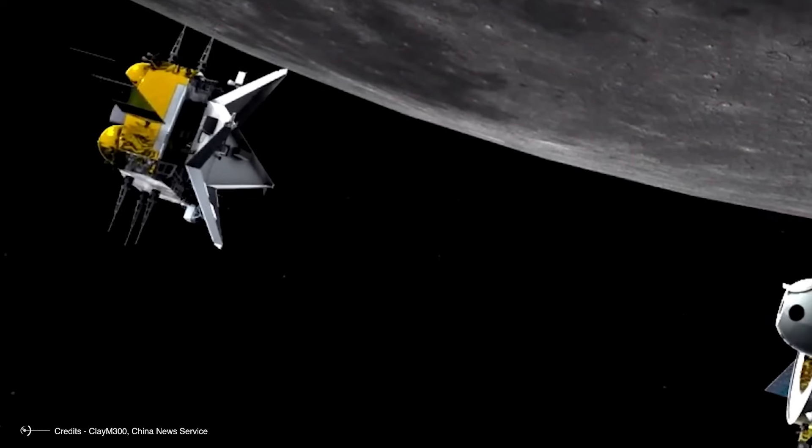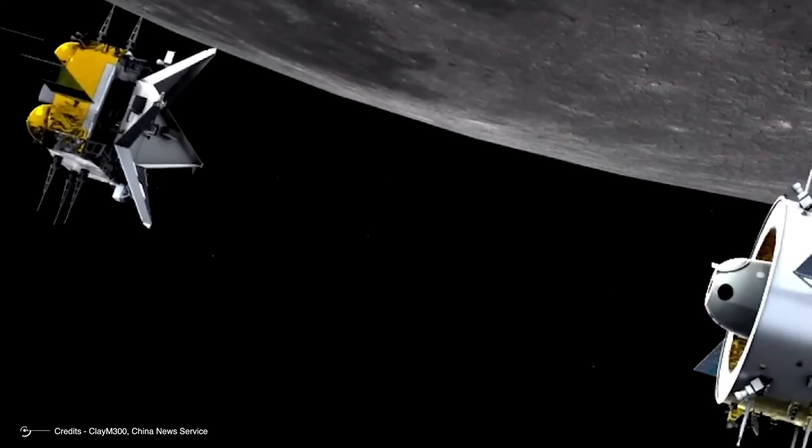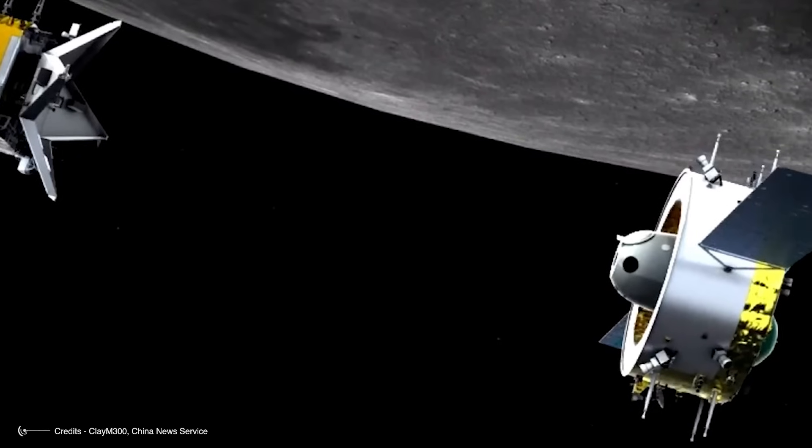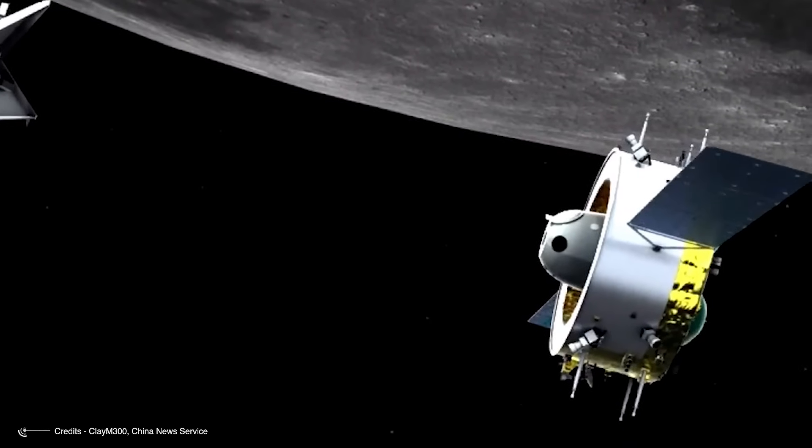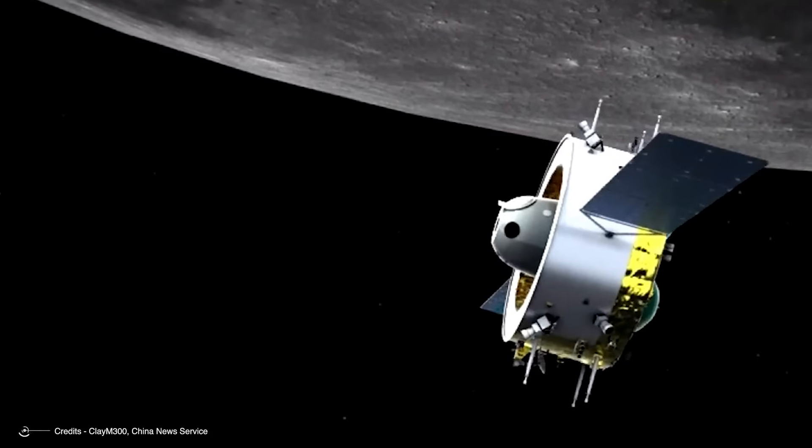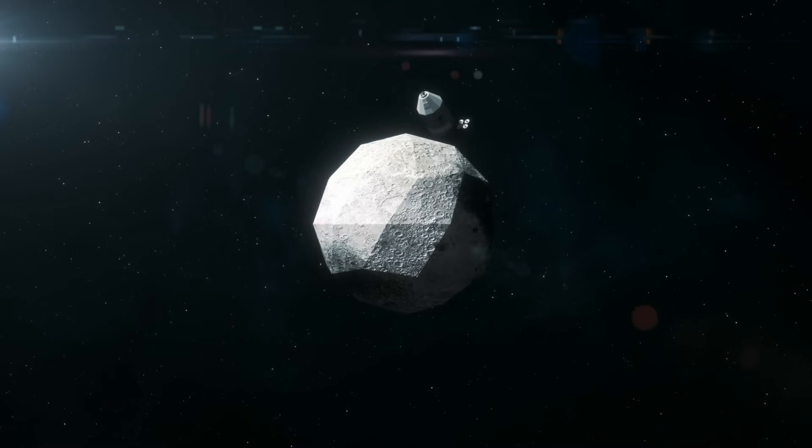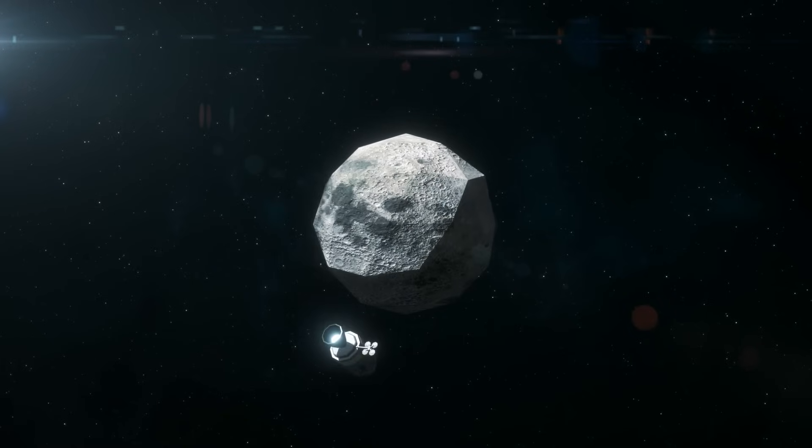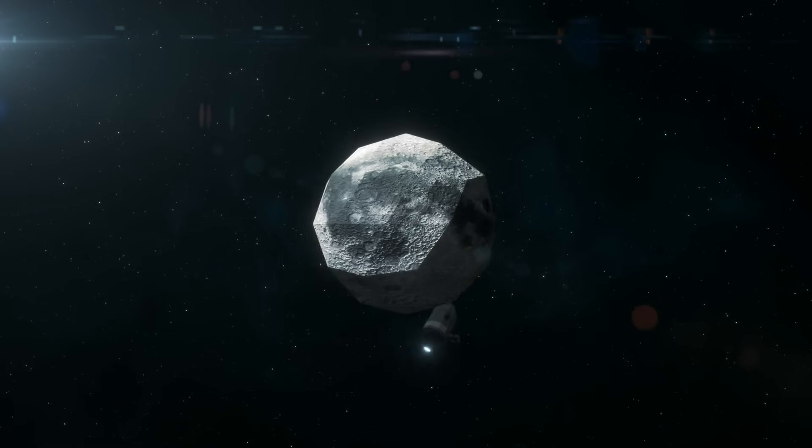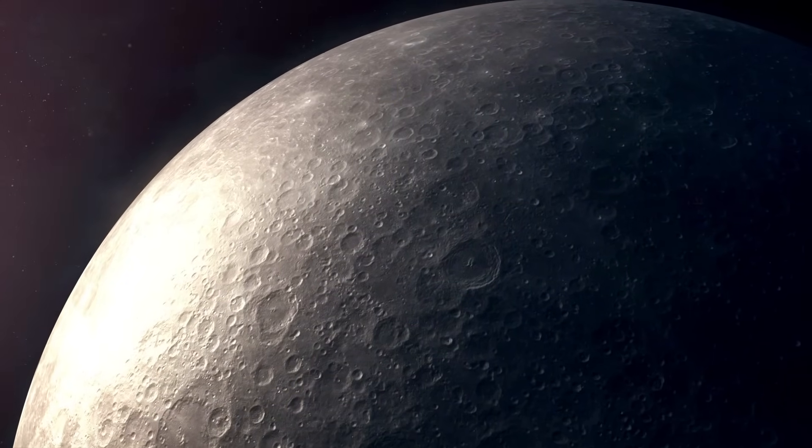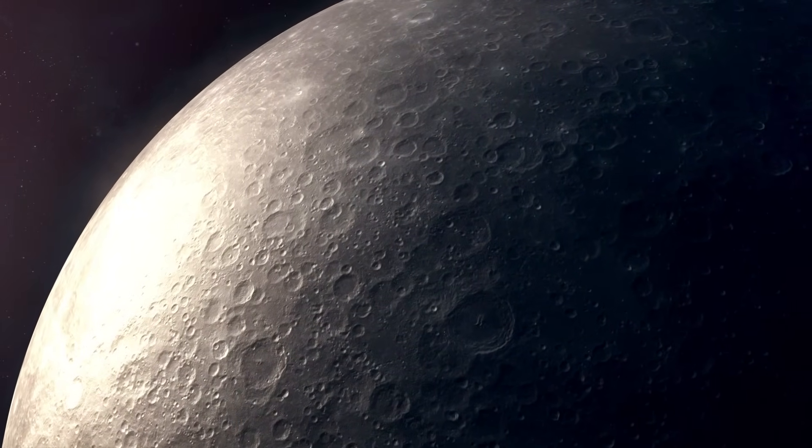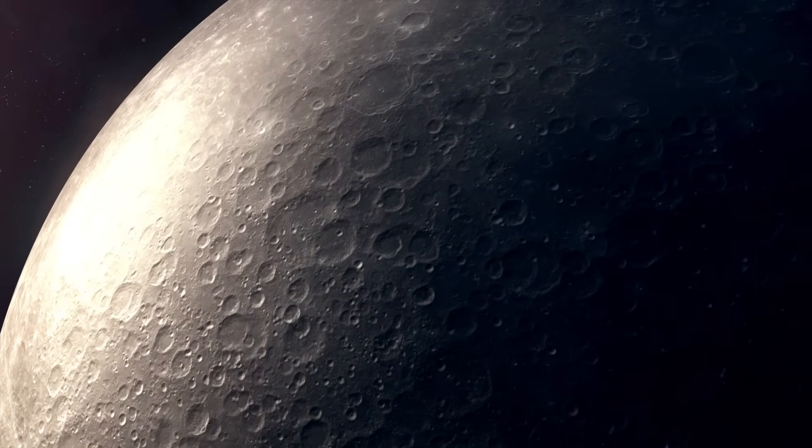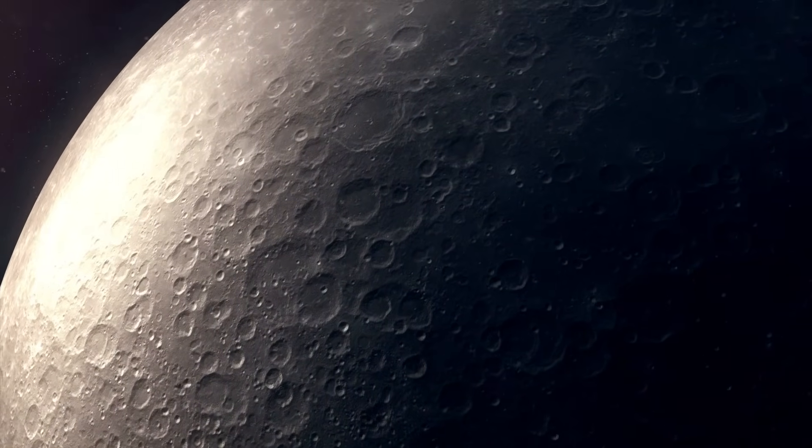The mission architecture mirrors that of Chang'e 5, which successfully returned 1,731 grams of lunar soil from the northern Oceanus Procellarum in the fall of 2020, located on the visible face of the Moon. The significance of this mission lies in the fact that all lunar soil samples returned to Earth so far were collected from the visible side of our natural satellite. Retrieving soil from the far side of the Moon is considered a priority because this region is markedly different from the visible face, and no satisfactory explanation for this difference has been found.